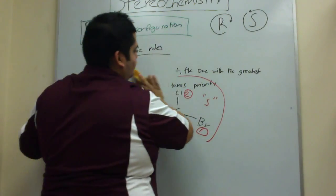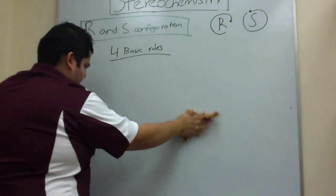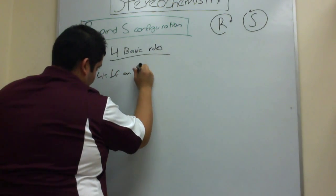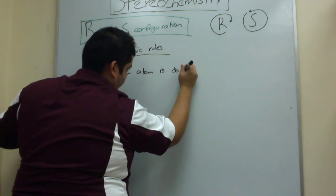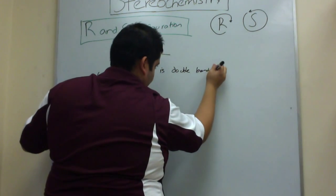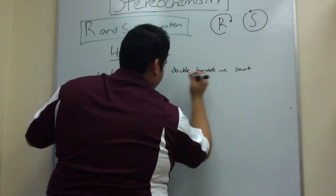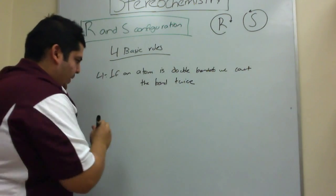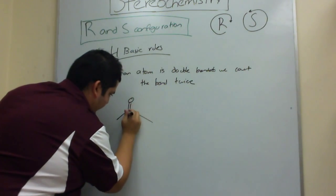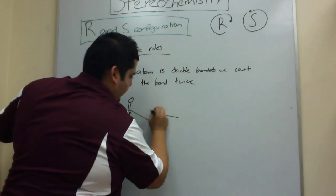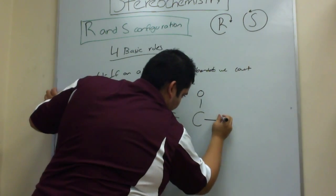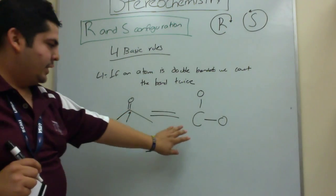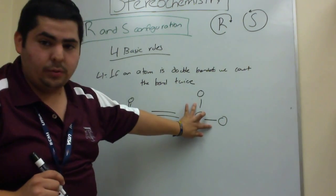The last rule says that if an atom is double-bonded, we count the bond twice. So if we have a carbonyl and we're looking at that carbon, this will be the same as saying that the carbon is single-bonded to two oxygens — that's what this rule says.